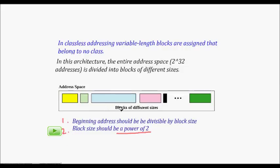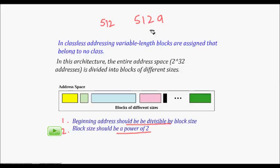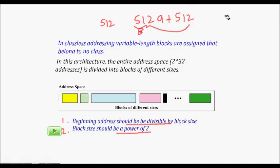To understand why the start address must be divisible by block size: if our network block size is 512 (which is a power of two), the starting address should be a multiple of 512. Then the end address is the starting address plus 512, which is also divisible by 512. This way we can start new blocks cleanly after each block ends.